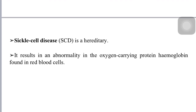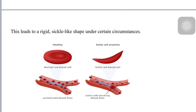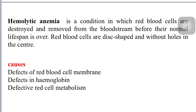Sickle cell anemia is a group of blood disorders typically inherited from a person's parents. The most common type is known as sickle cell anemia. It results from an abnormality in the oxygen-carrying protein hemoglobin found in red blood cells. This is the picture of sickle cell anemia — the shape of the RBC leads to a rigid sickle shape that becomes trapped under certain circumstances.